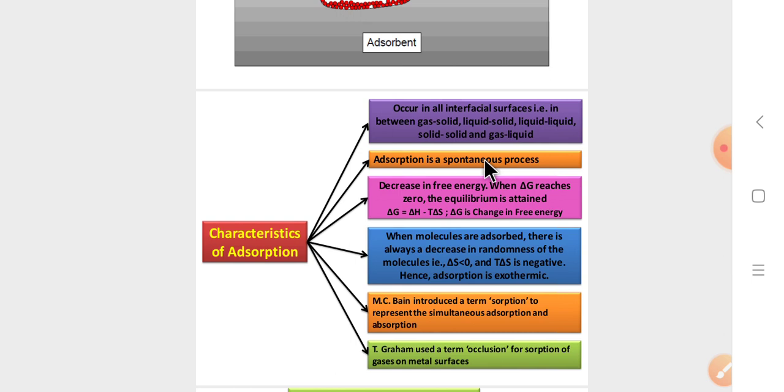Now delta G value reaches zero, it attains the equilibrium reaction. In thermodynamic reactions, delta G is equal to delta H minus T delta S. This delta G is the change in free energy. When delta G decreases, the adsorption should be spontaneous. Delta G equals decrease means the reaction should be a spontaneous process.